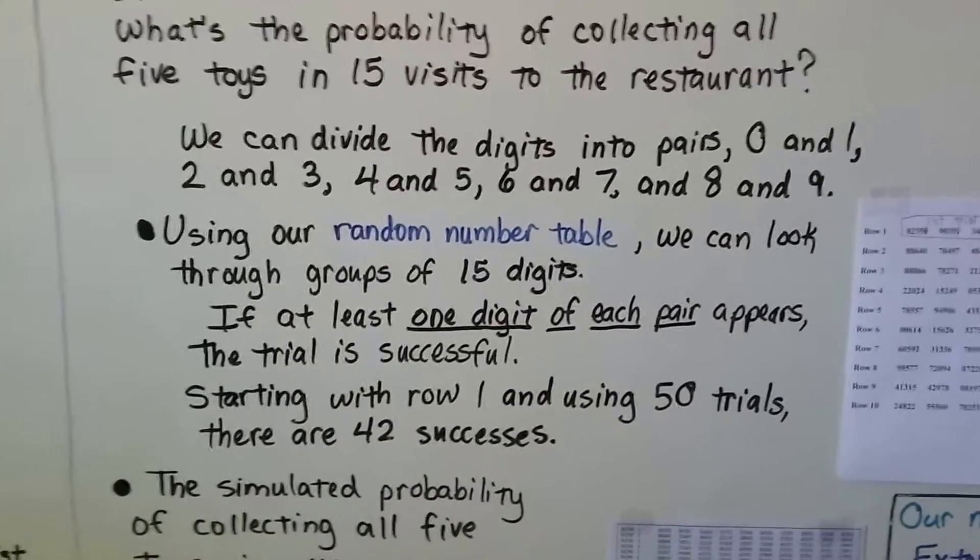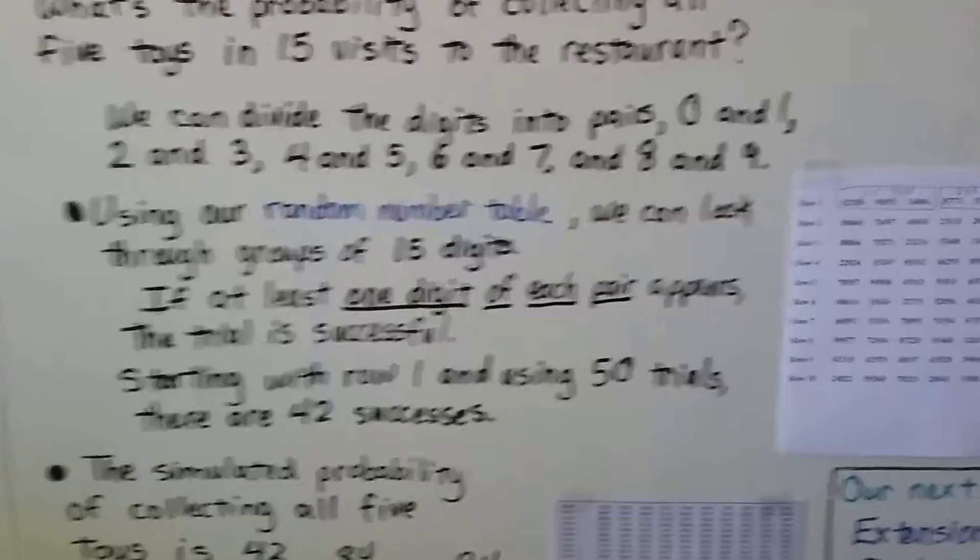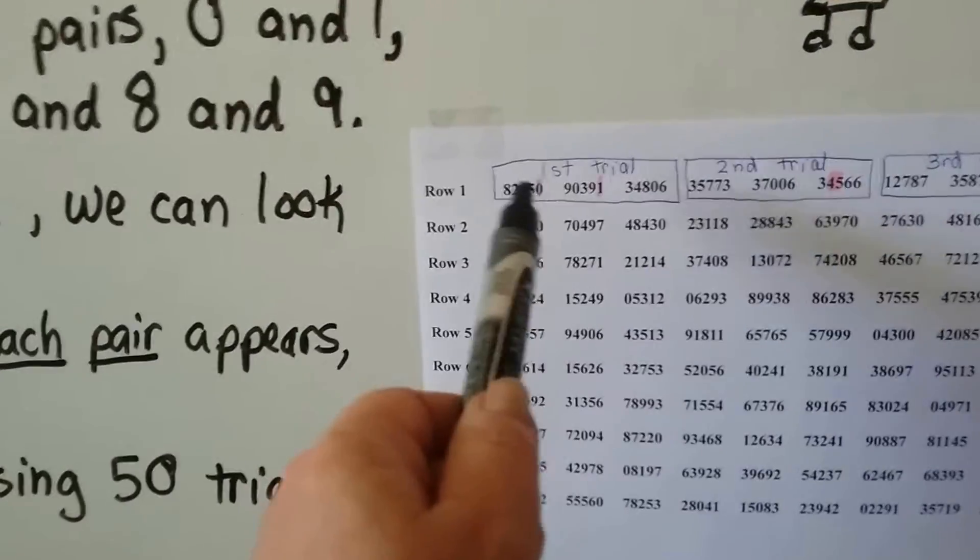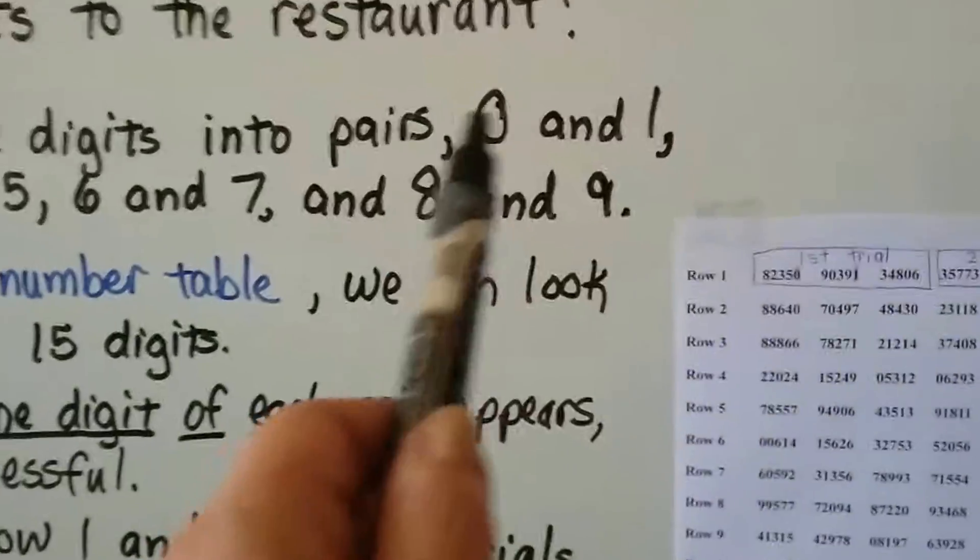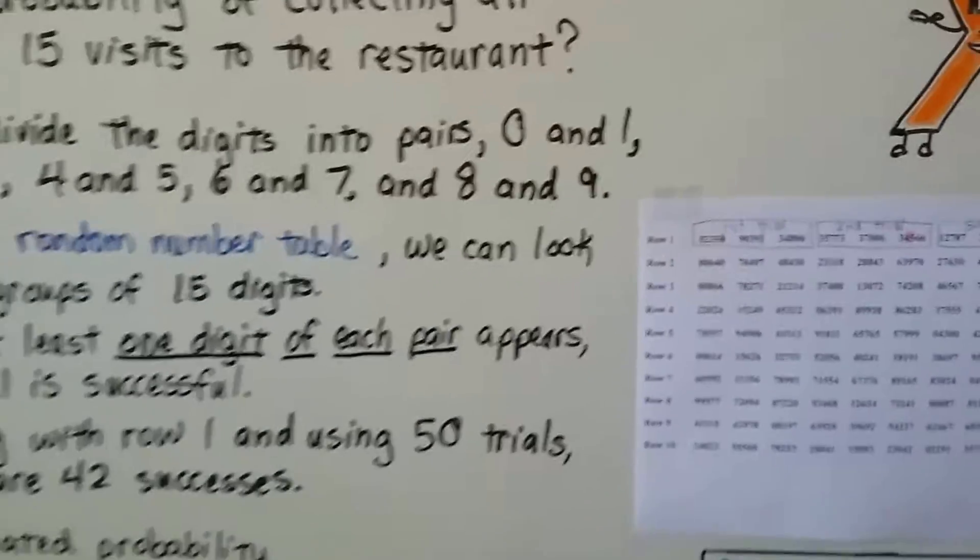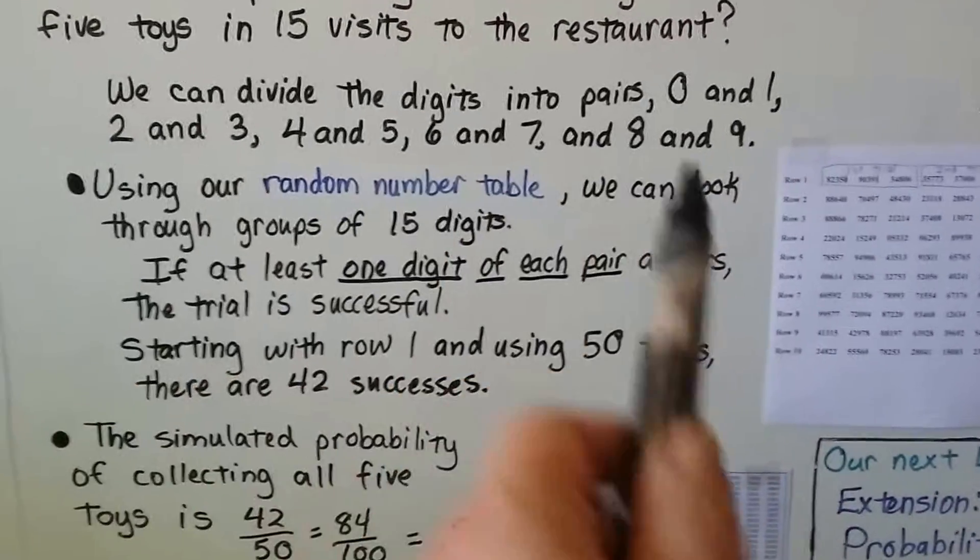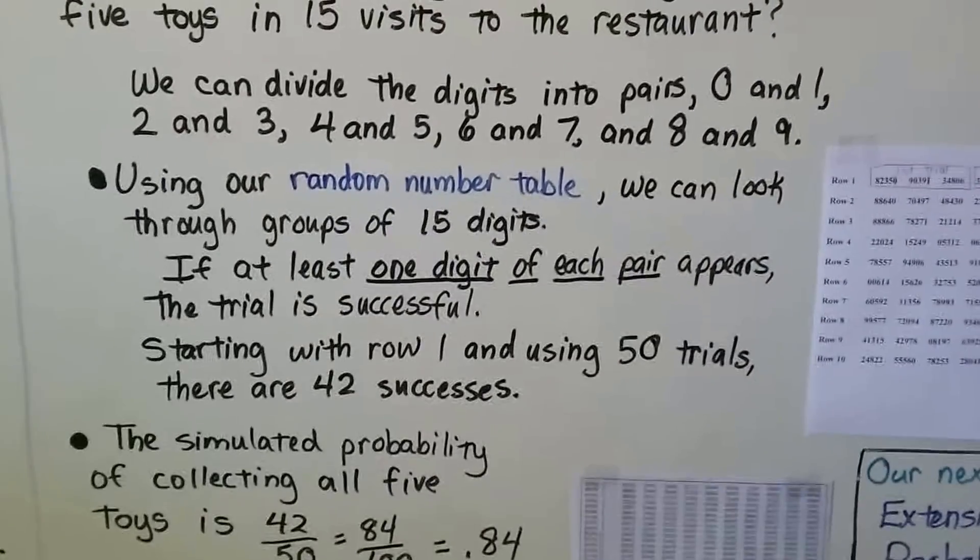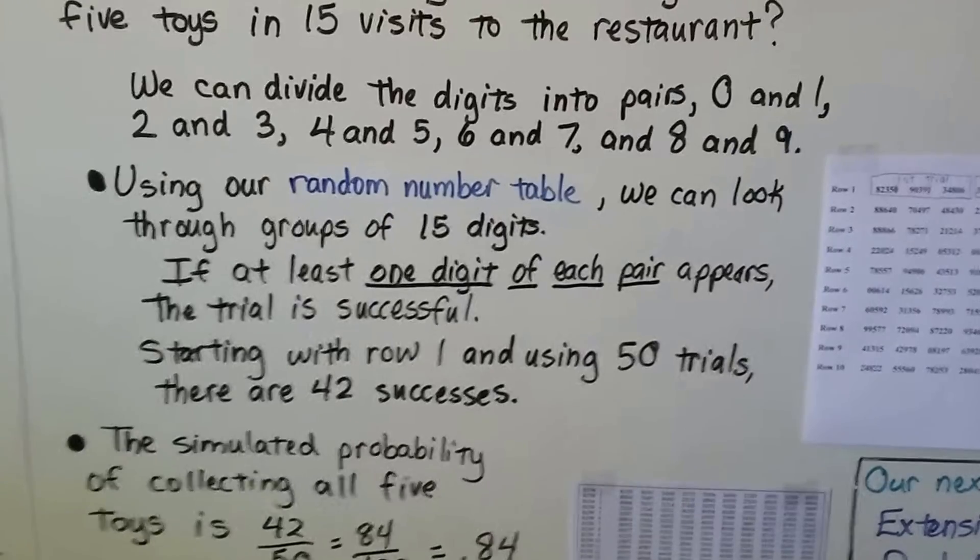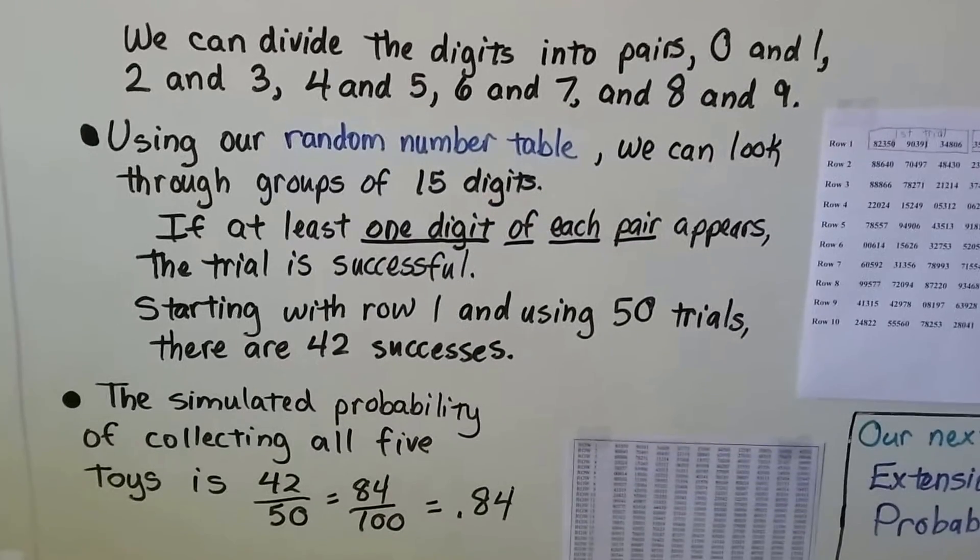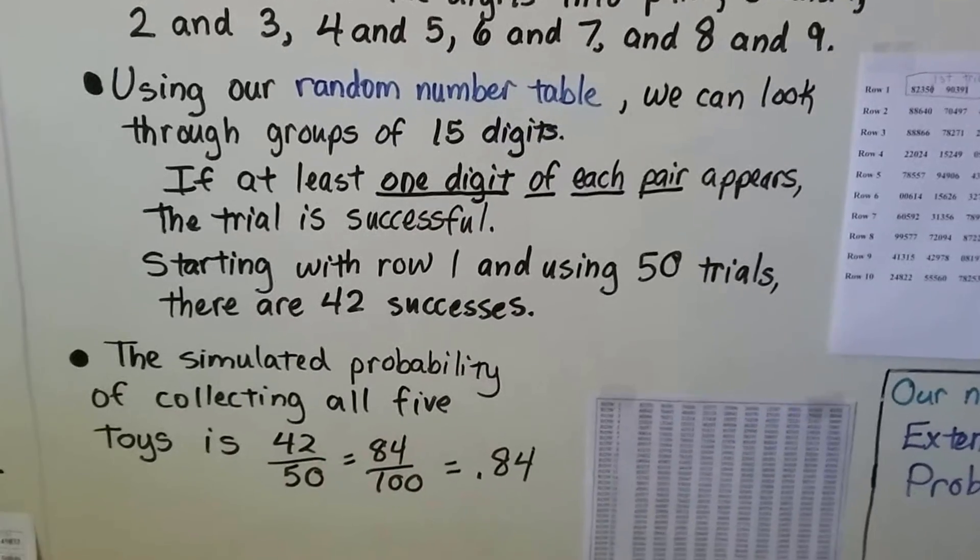Using our random number table, we can look through groups of 15 digits. So we've got 15 digits. We've got a 0 and 1. So yeah, that matched 0 and 1. And we can look through each group of 15 digits and see if they've got any of these pairs. If at least one digit of each pair appears, the trial is successful. And starting with row one and using 50 trials, there's 42 successes.